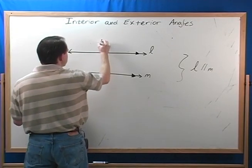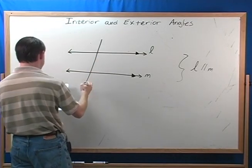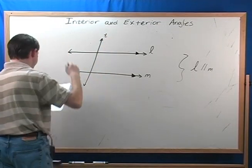Now, I draw a transversal. The transversal crosses two lines, remember, two or more lines. So I draw a transversal, and I just call it T, T for transversal.